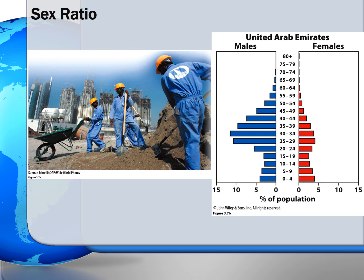Another ratio that geographers analyze from the population pyramid is the sex ratio. The sex ratio is the proportion of males to females in a population. In normal conditions, more males are born than females, given a slight imbalance. The natural sex ratio, therefore, is 105 males to 100 females.